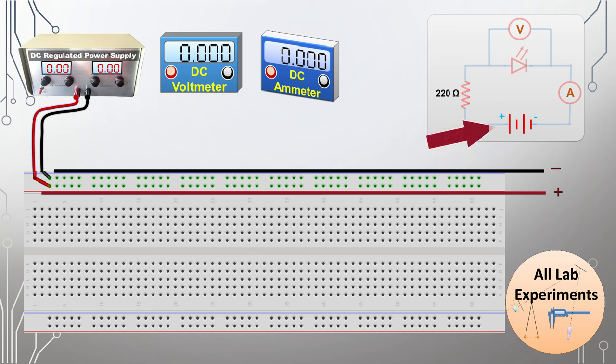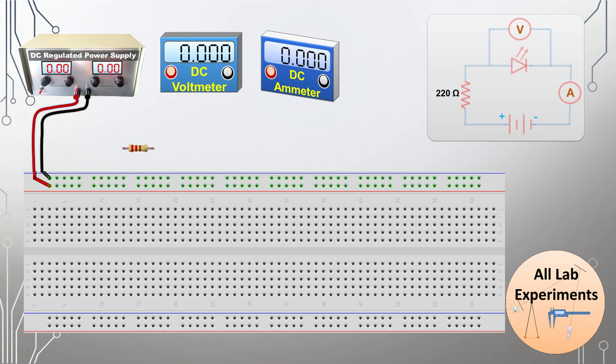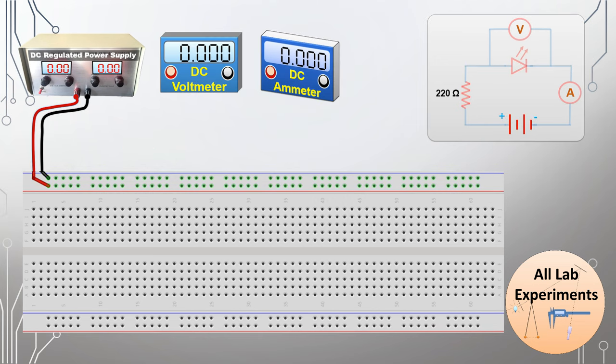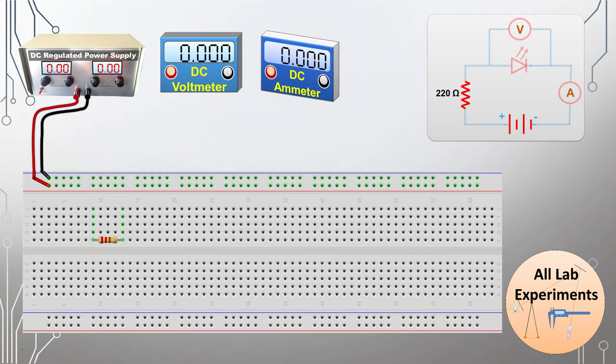After connecting the power supply, you can notice that it has been highlighted in the circuit diagram. Whatever portion we connect on the breadboard will be highlighted on this circuit so you can keep track simultaneously. After that, we place the 220 ohm resistor on the breadboard.